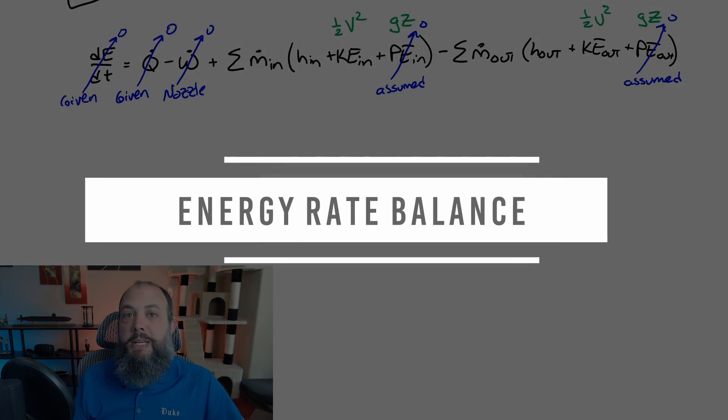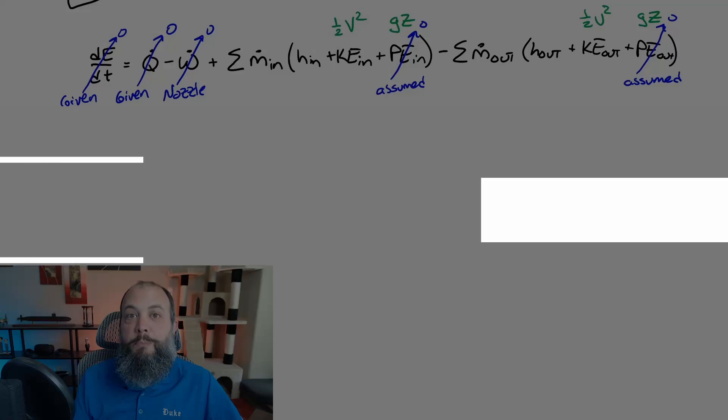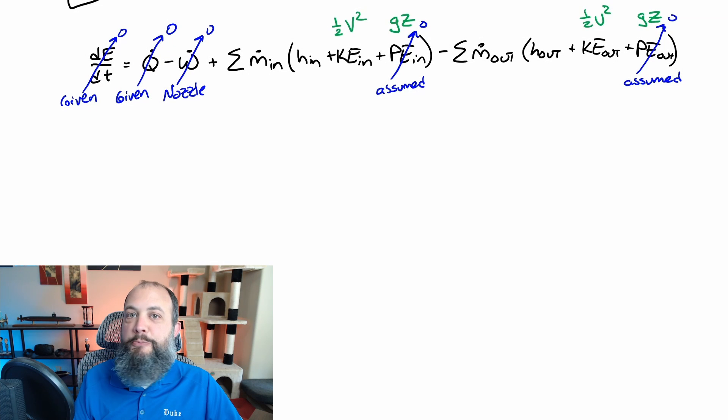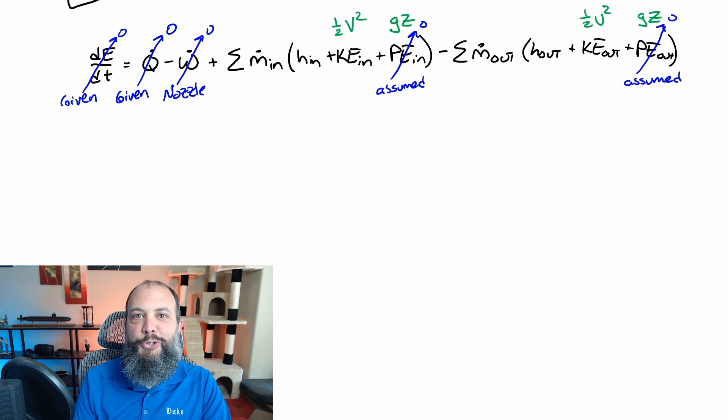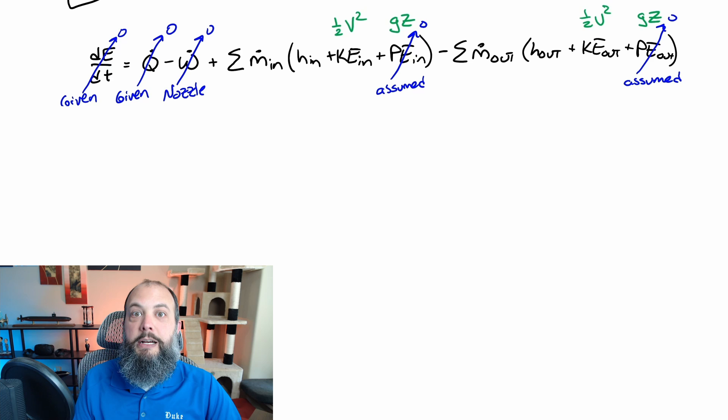So if we want to find temperature first, it makes sense to start with the energy rate balance, because we'll be able to find temperature if we know enthalpy at the outlet. So I'm always going to start off with the full version of the energy rate balance equation, cross off the terms that are zero based on our givens, which is dE/dt and heat transfer, cross off work as zero because it's a nozzle, and that's not what nozzles do. A nozzle's purpose is to convert temperature and pressure energy into velocity. It doesn't require work, it doesn't generate work. So I didn't need to be told that work was zero in the problem statement. That was implied based on it being a nozzle.